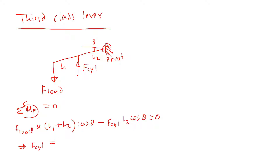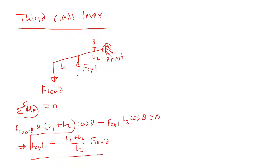Solving for F cylinder, the force the cylinder must produce is (L1 + L2) / L2 times F load. The cylinder has to produce more force than the load, which means the third-class lever is mechanically disadvantageous — we need a bigger cylinder to lift the same amount of load.